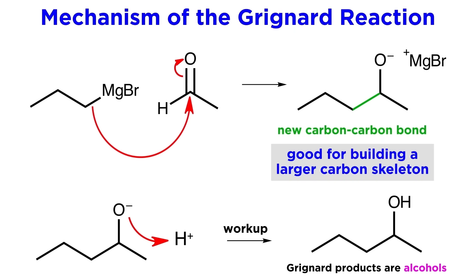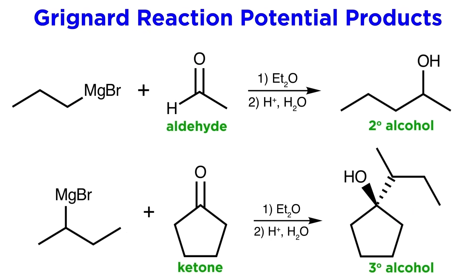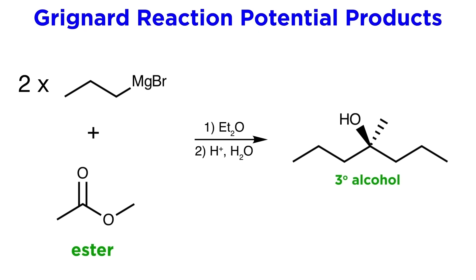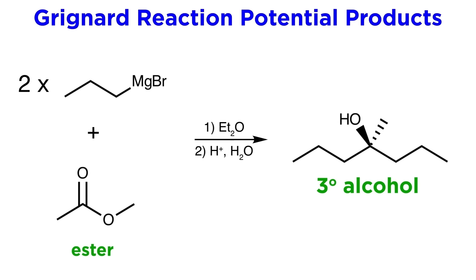This is a powerful synthetic technique, allowing us to build a larger carbon skeleton. Grignard reagents can attack different carbonyl-containing functional groups. Aldehydes and ketones can be converted into secondary and tertiary alcohols respectively. Esters can also act as Grignard substrates, allowing for two equivalents of the same Grignard reagent to attack, yielding a tertiary alcohol where two of the alkyl groups are identical. Grignard reactions are also irreversible, as a carbanion is not a suitable leaving group.